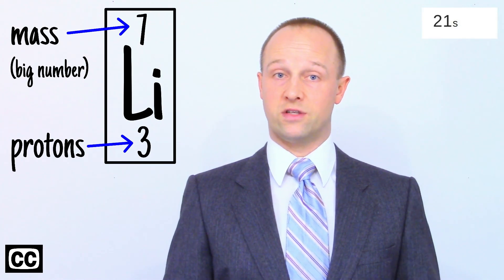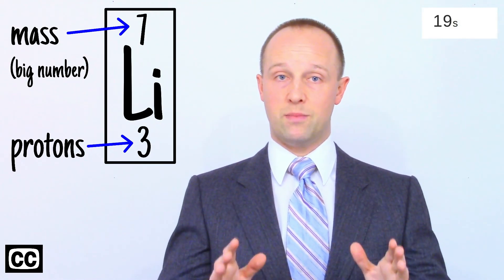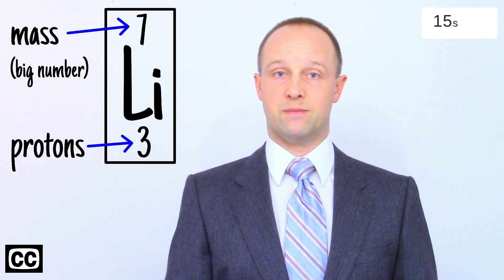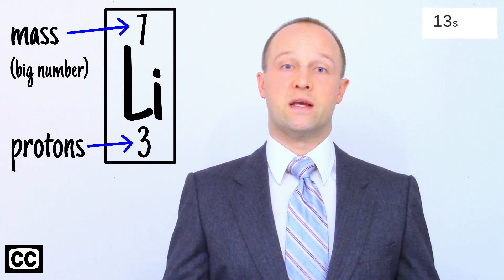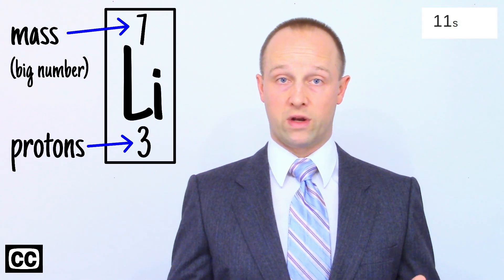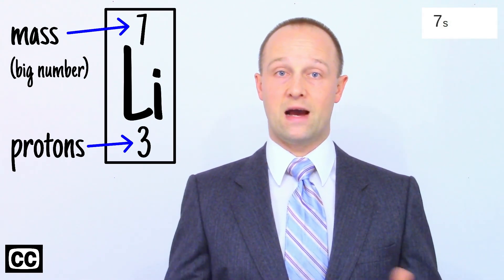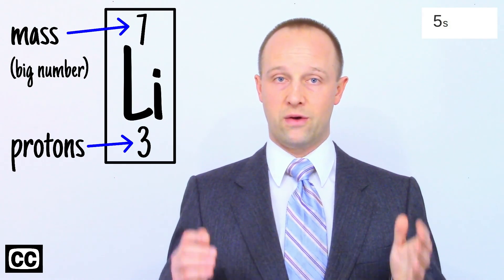Because their equal and opposite charges attract, there is always the same number of protons as electrons. The larger number is the mass number, the mass of the atom. Because protons and neutrons have a mass of one each, and electrons have almost zero mass, this number is basically how many protons and neutrons in total are in the nucleus.